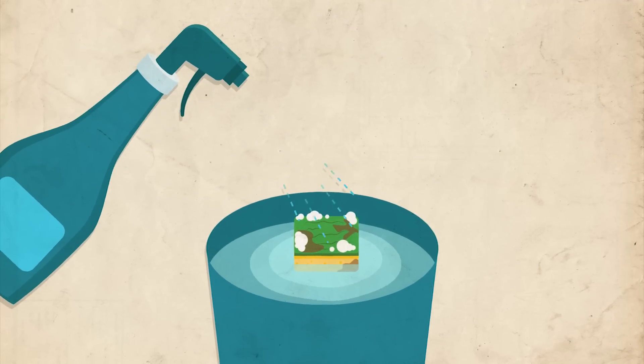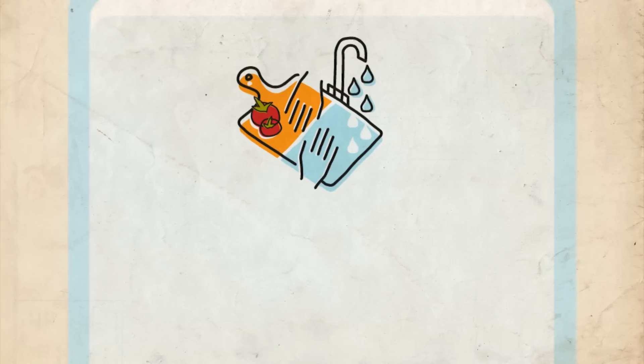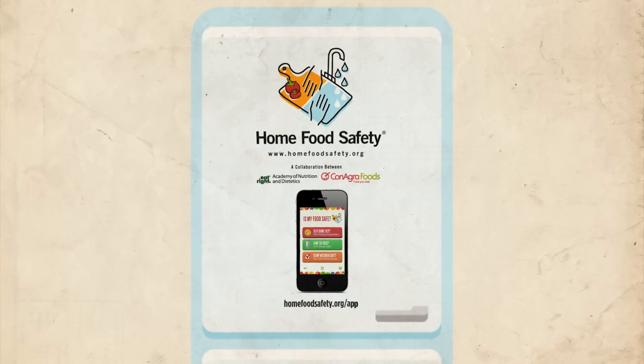Disinfect sponges in a chlorine bleach solution and replace worn sponges frequently. Learn more at homefoodsafety.org and download the Is My Food Safe app.